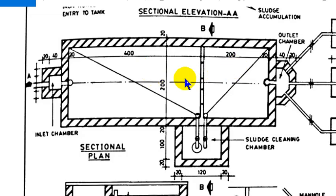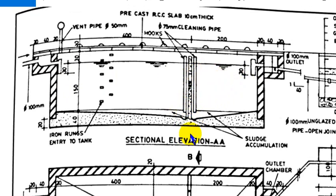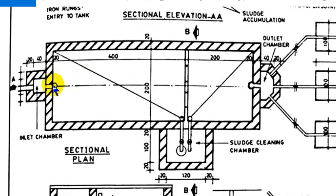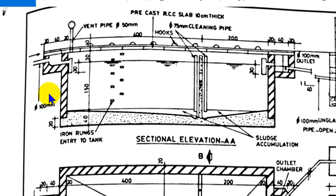This is the 2-compartment section. The dimensions include 1 m², 1 m³, and 3 m². There is a pipe in the outlet chamber. The sectional area is 4 cm.